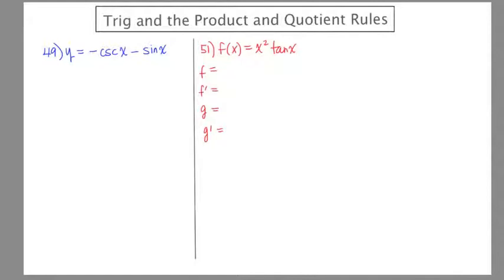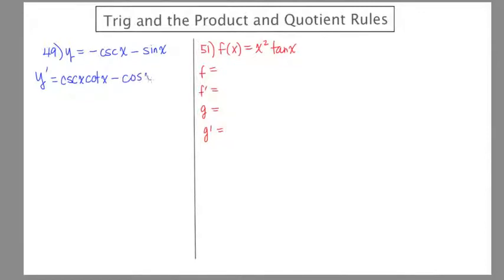In number 49, the function is y equals negative cosecant x minus sine x. We don't really need the product or quotient rule here, but the author mixes these in to make sure you know when to use what processes. Whenever I take the derivative of a trig function beginning with c, it's going to be the opposite in sign. So the derivative of cosecant is negative cosecant cotangent, making this positive cosecant x cotangent x. The derivative of sine is cosine.